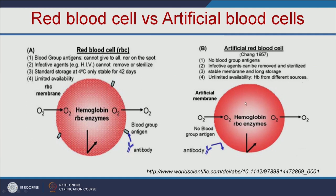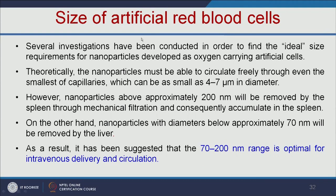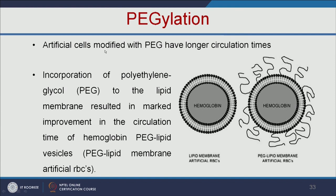The size of artificial cells is a very important parameter. Several investigations have been done to identify the ideal size for artificial RBCs. Theoretically, the normal RBC size is between 4 to 7 micrometers in diameter. Nanoparticles larger than 200 nm are removed by the spleen, and those smaller than 70 nm are removed by the liver. So artificial RBCs must be between 70 to 200 nm for intravenous delivery and circulation. We can also increase circulation time by adding PEG — called PEGylation — which improves circulation and stability of the artificial cell.